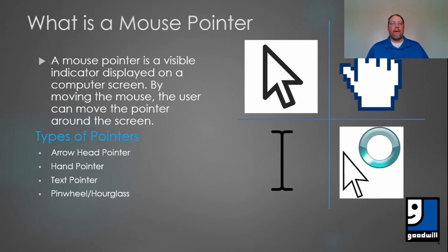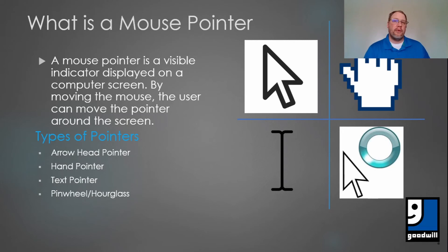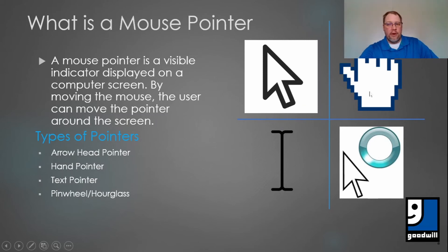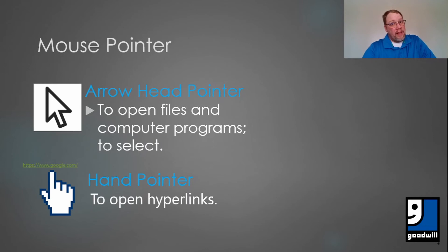Now, mouse pointers. There are four main types of mouse pointers you'll usually see when operating a computer. A mouse pointer is a visible indicator displayed on a computer screen that moves with the mouse. You're going to see four different types: your arrowhead, which is the one I'm using right now to point things out; your hand pointer, which is this one right here; your text pointer or I-beam cursor; and your pinwheel hourglass. Your arrowhead pointer allows you to open files and programs or select items on the screen — this is the one you'll use most of the time.